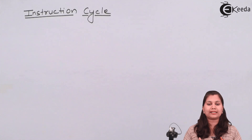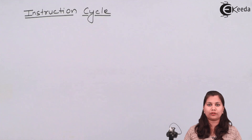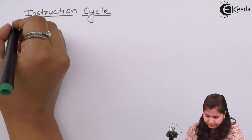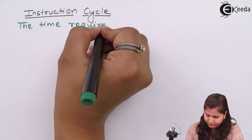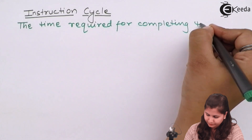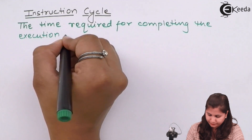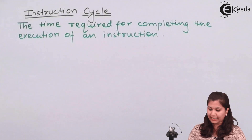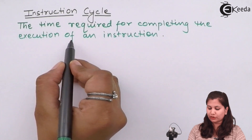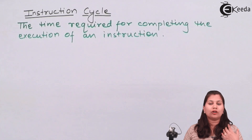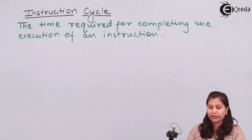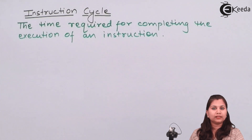The first term is the instruction cycle. It is the time taken to execute the complete instruction by the microcontroller. We can write the definition of instruction cycle as: the time required for completing the execution of an instruction. This time can be like 5 microseconds, 1 microsecond, or 0.1 microsecond — it can be anything. The complete time taken is called the instruction cycle.